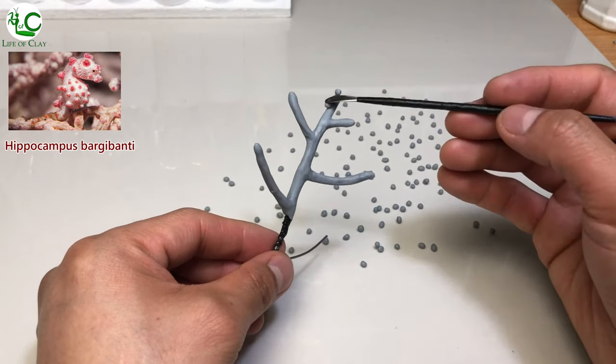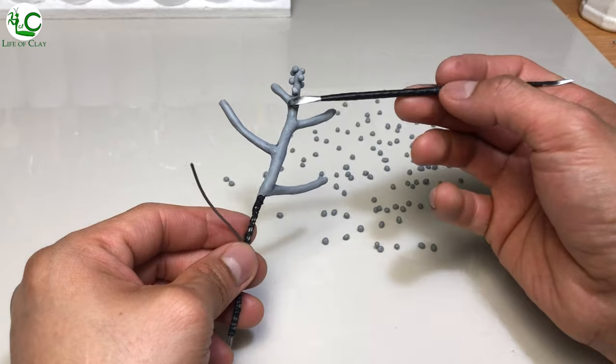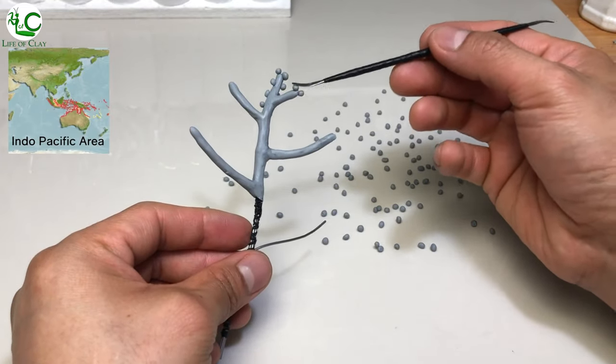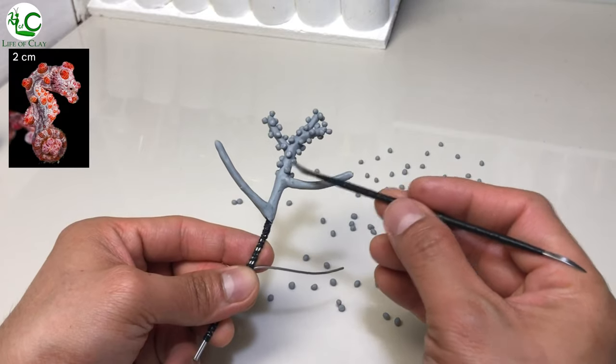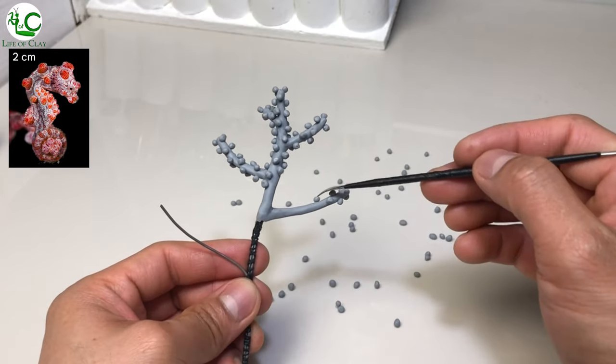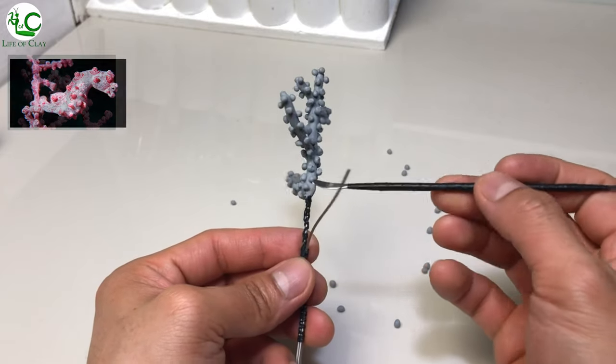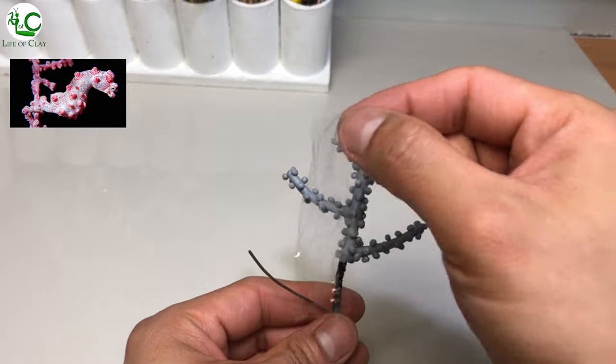Hippocampus bargibanti, also known as bargibant's seahorse or the pygmy seahorse, is a seahorse of the family Syngnathidae, found in the central Indo-Pacific area. This is also one of the smallest seahorse species in the world, usually less than 2cm in size, and lives exclusively on fan corals called gorgonians, clinging on it using their long prehensile tail.